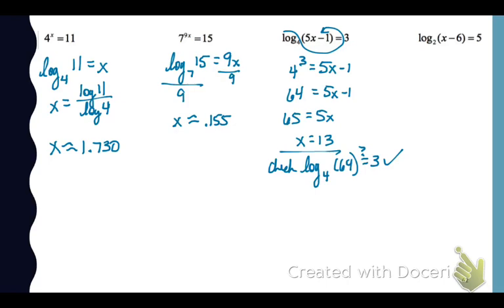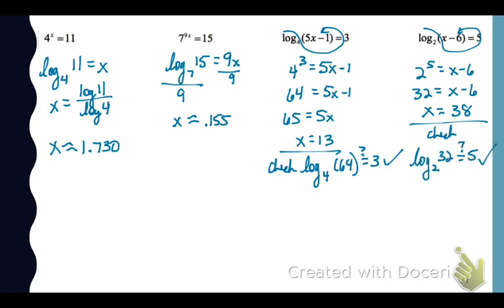The last equation will work the same way. We're going to switch forms. So 2 to the fifth power equals x minus 6. 32 equals x minus 6, so x equals 38, potentially. Now I'm going to check that by plugging it in. So I'm seeing, does log base 2 of 32 equal 5? Yes, it does. That checks.